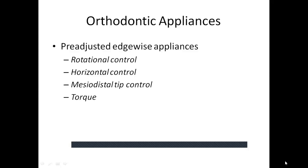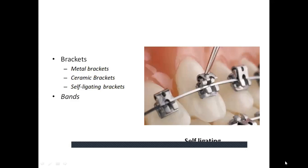Bracket types include metal brackets, ceramic brackets made of monocrystalline or polycrystalline ceramics which are highly aesthetic but prone to fracture during torsional and tipping activation. Ceramic brackets also exhibit increased frictional resistance to sliding mechanics and can cause abrasion of the opposing tooth.